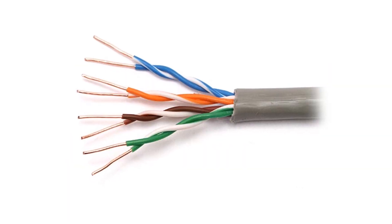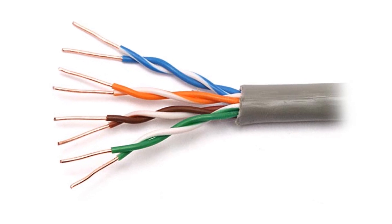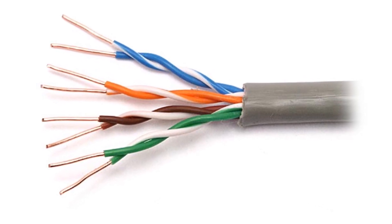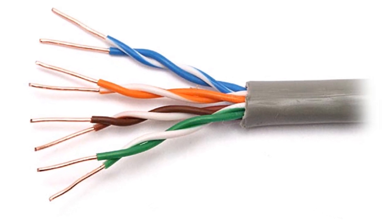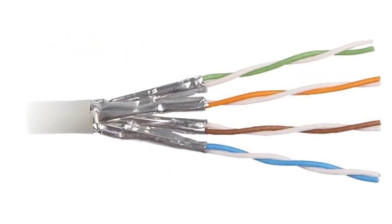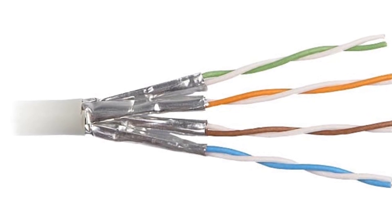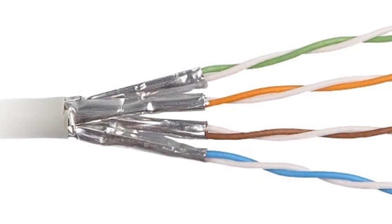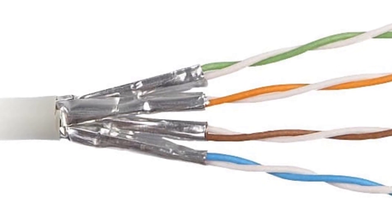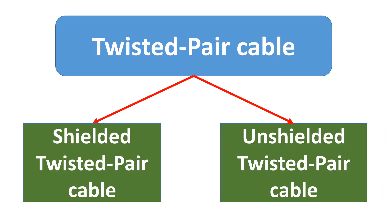Twisted Pair Cable. One of the oldest, and still in use, transmission mediums is twisted pair cable. It consists of pairs of insulated copper wires twisted together. There are two types of twisted pair cables: shielded twisted pair cable and unshielded twisted pair cable.